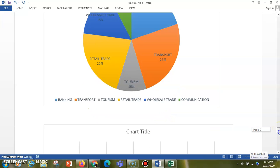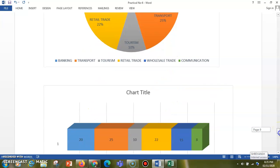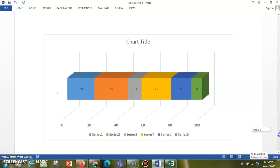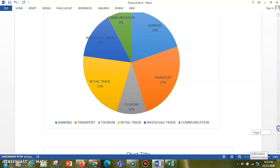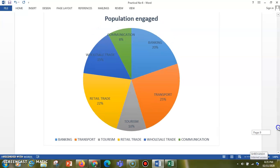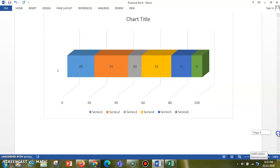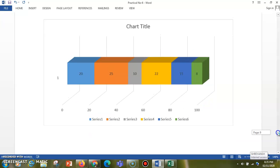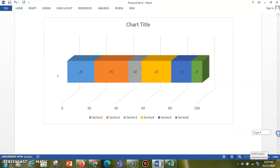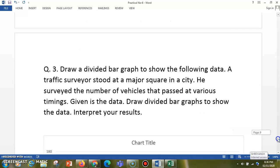The same data can be represented in the form of a divided bar graph. Here also you can see that 25% is given for transportation and 8% is given for communication. The same way you can analyze that the data can be represented in the form of divided circle and also in the form of a simple divided bar graph.